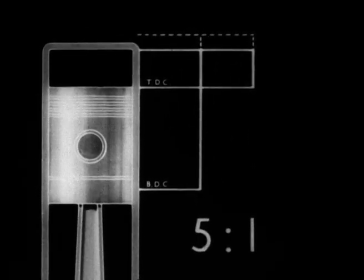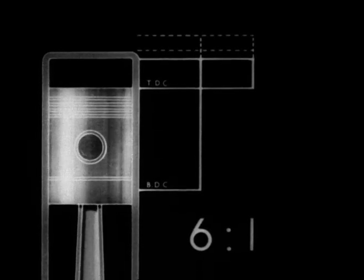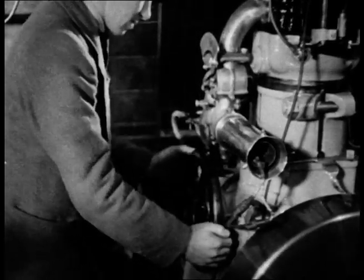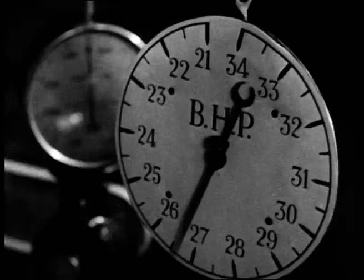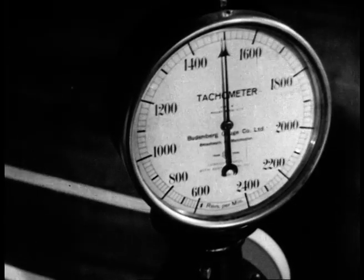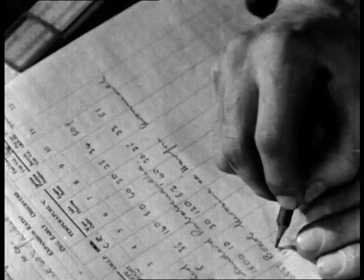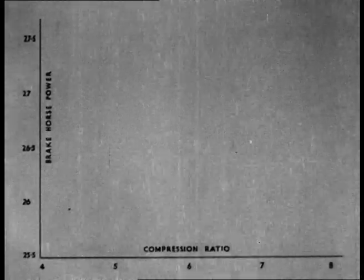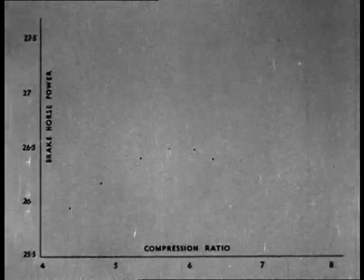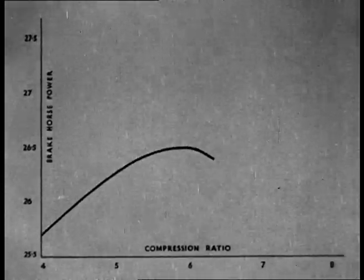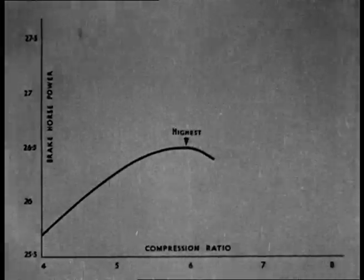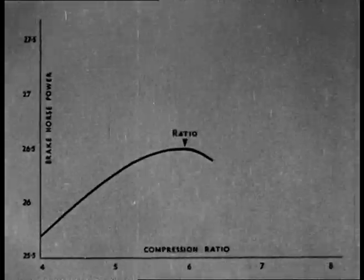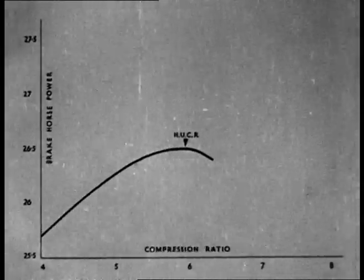The greater the compression ratio, the greater is the power output of the engine. The amount of compression is governed by the kind of fuel used. We will test out two different fuels with an engine which has a cylinder whose compression ratio can be altered as it is running. The power output is recorded at various fixed speeds. By plotting the results, it can be seen that the power output is increased as the compression ratio is raised. At a certain point, pinking or knocking occurs. This point is called the highest useful compression ratio, the HUCR of the fuel.